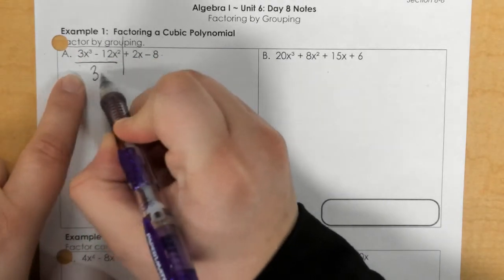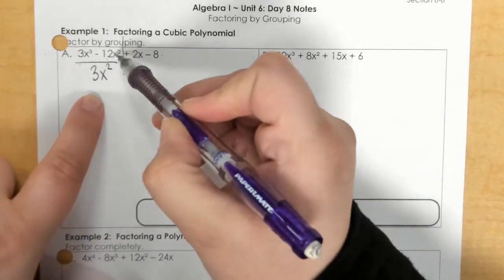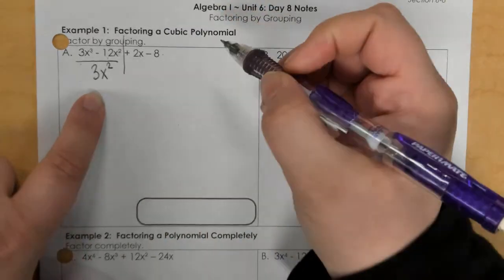That would be 3x squared. x squared is my lowest x, take it out, 3 goes into both those numbers.